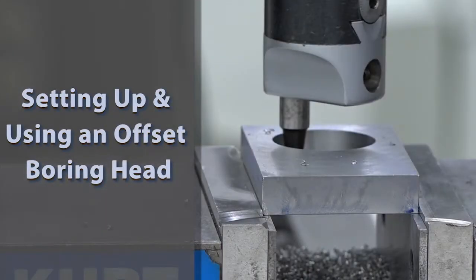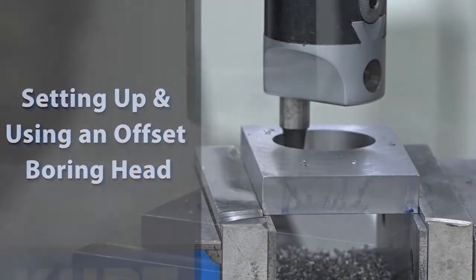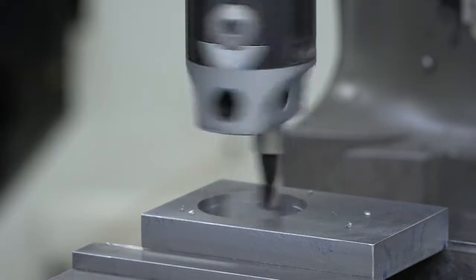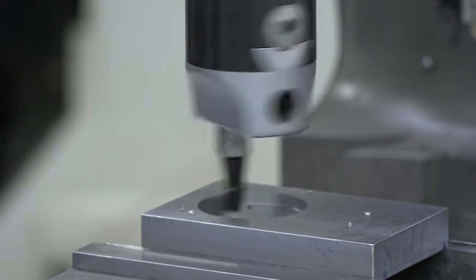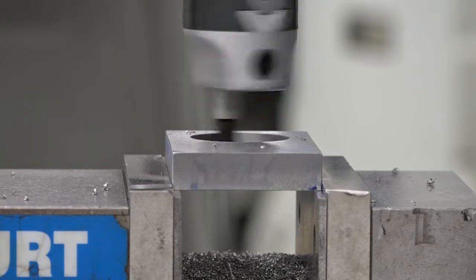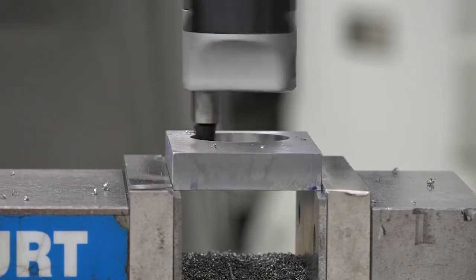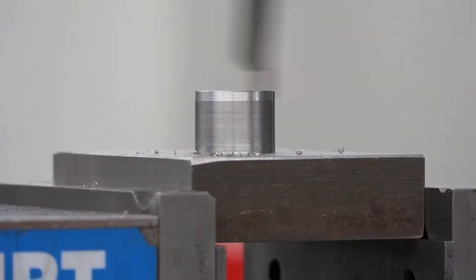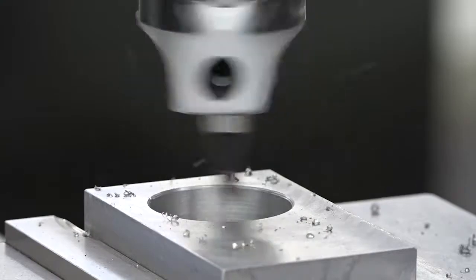Welcome to setting up and using an offset boring head. This head is used on a Bridgeport machine to perform a few different tasks. The first and most common is to bore holes that require a precise diameter in a critical location. They're also frequently used for machining the external diameter of a boss, counter bores and chamfering holes, as well as adding a radius at the top or bottom of a hole.